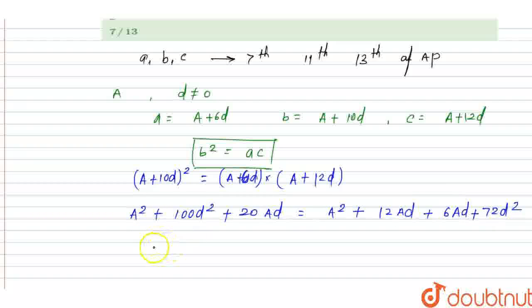This simplifies to A² + 100d² + 20Ad = A² + 18Ad + 72d².